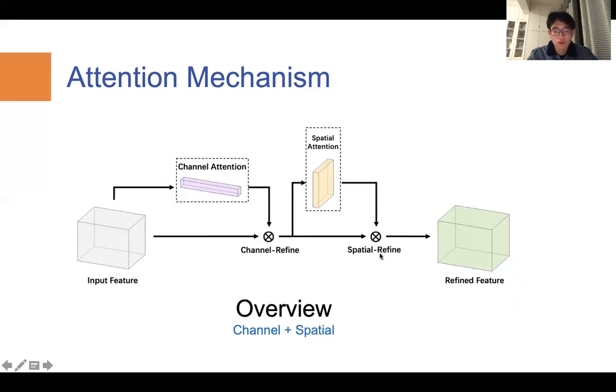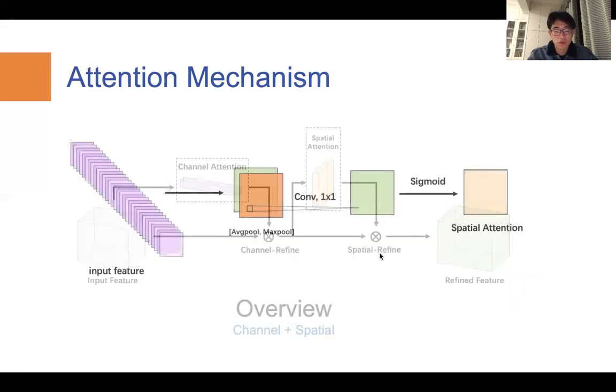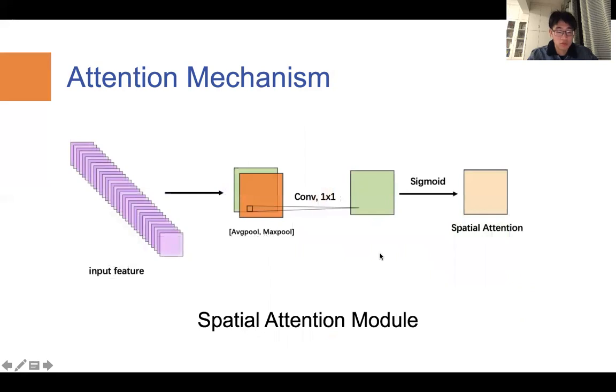Here shows how spatial attention module works. After average and max pooling, convolutional layer, and sigmoid function, the output spatial attention map focuses on which part of the image is of more importance in terms of scene text detecting.